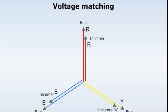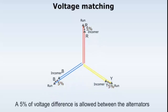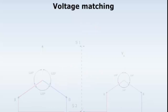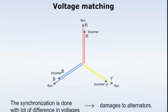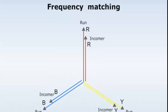The second condition is that the voltage of the incoming alternator should match the voltage of the running alternator. For proper synchronization, a 5% voltage difference is allowed between the alternators. If there is a difference in voltage levels of more than 5%, there will be a flow of large amounts of circulating currents in the internal circuit connecting the two alternators. If synchronization is done with a large voltage difference, it may cause damage to both alternators.